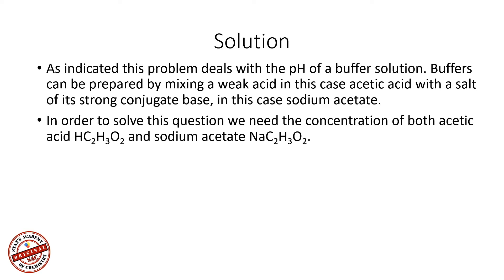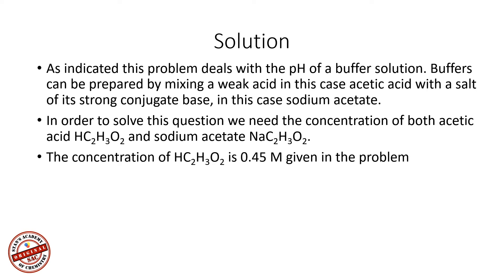In order to solve this question, we need the concentration of both acetic acid (HC₂H₃O₂) and sodium acetate (NaC₂H₃O₂). Sodium acetate is a strong electrolyte; therefore it dissociates 100% to give acetate ions and sodium ions, which means if you have the concentration of sodium acetate, you also have the concentration of acetate ions. The concentration of acetic acid is given as 0.45 moles per liter. The concentration of sodium acetate is not given — we have to calculate it from the number of moles and the volume, which is 1 liter.